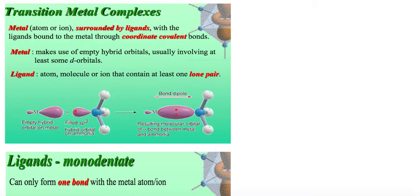Now the metal would be either an atom or an ion and it would be surrounded by what we call ligands.